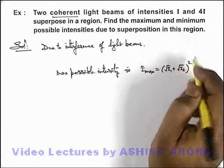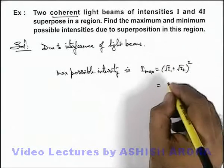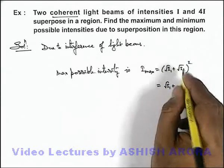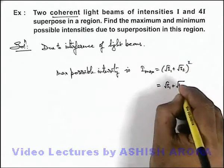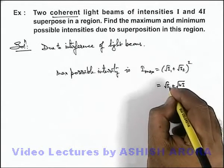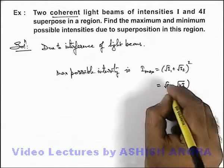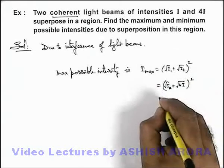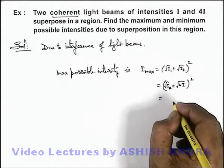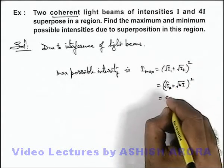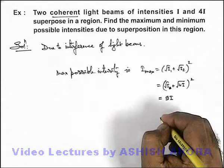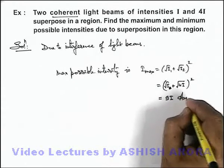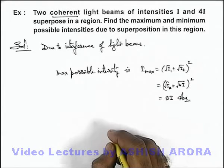Here, if I₁ and I₂ are taken as I and 4I, this can be written as √I + √4I. This is (√I + √4I)². On simplifying, we get (3√I)², that will be 9I. This is the maximum possible intensity in the region that will give an answer to the problem.